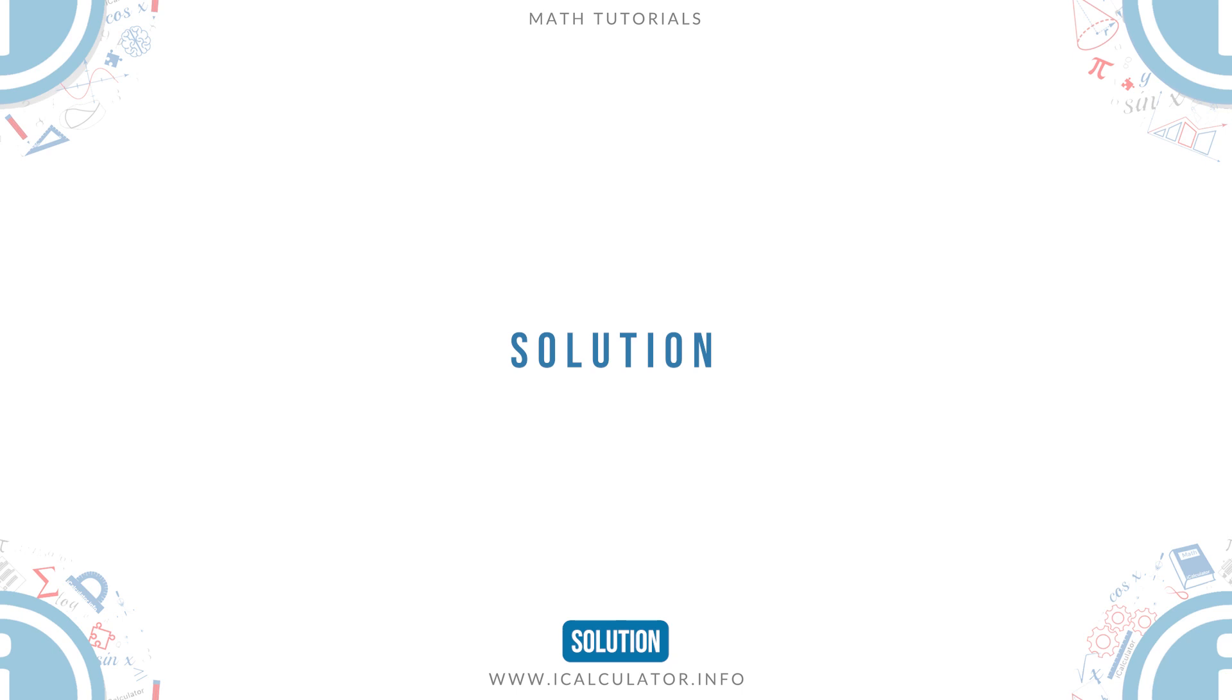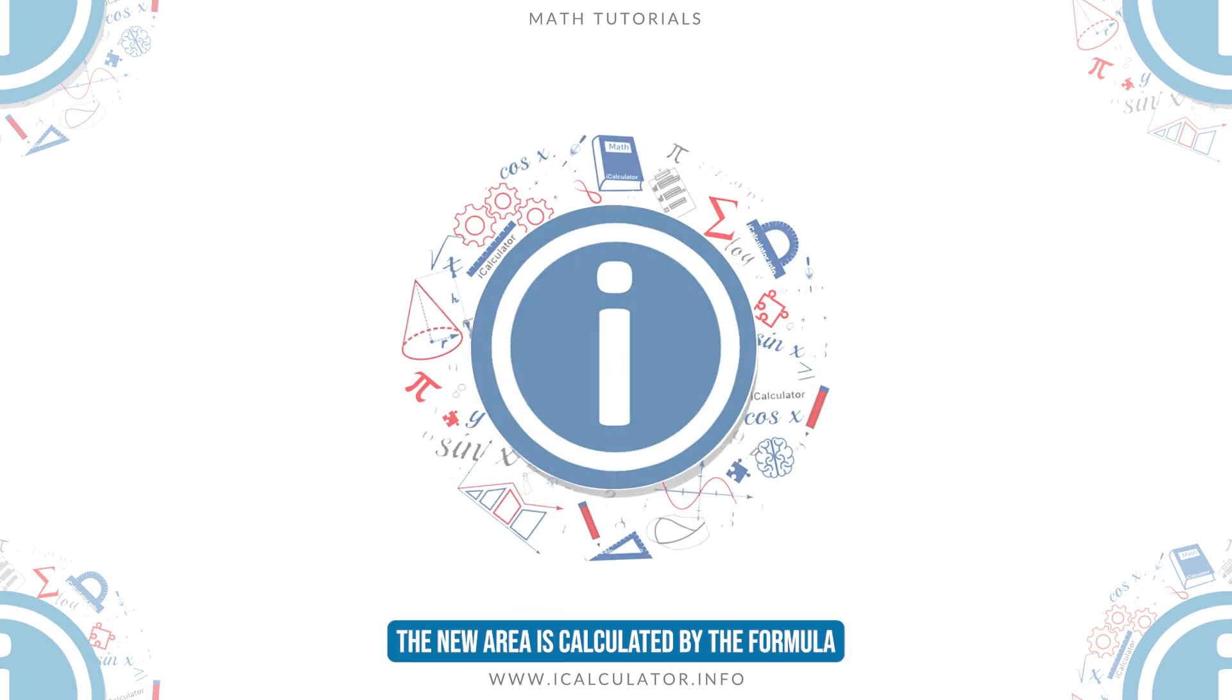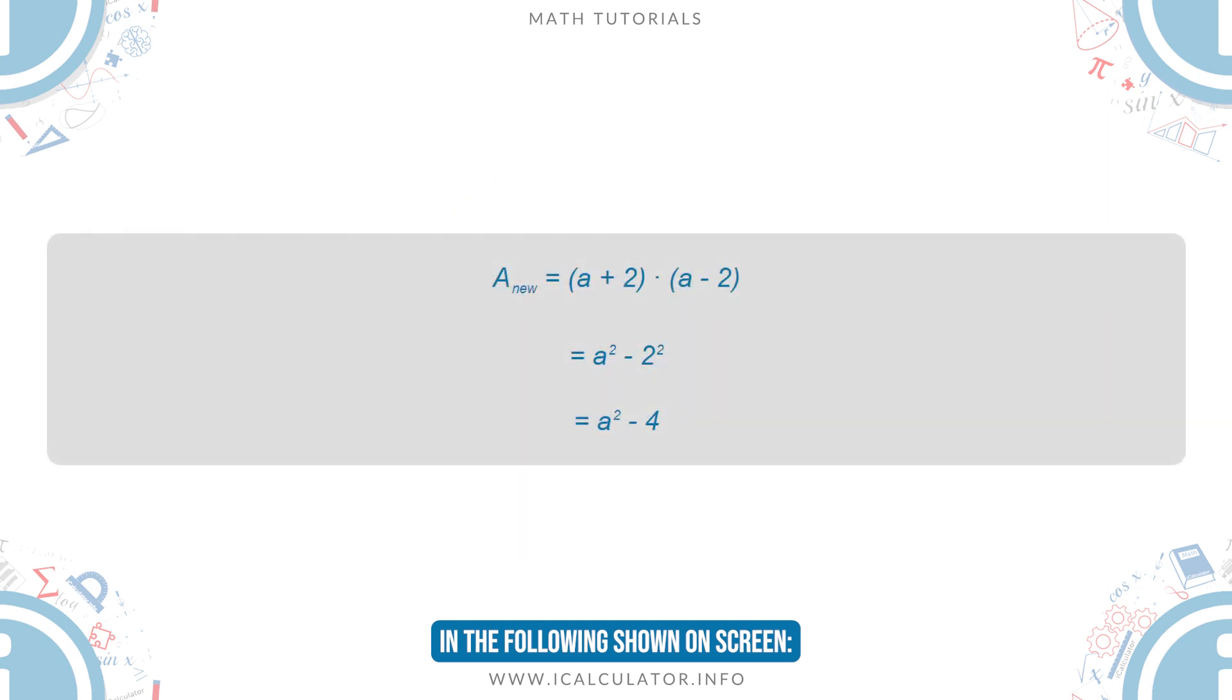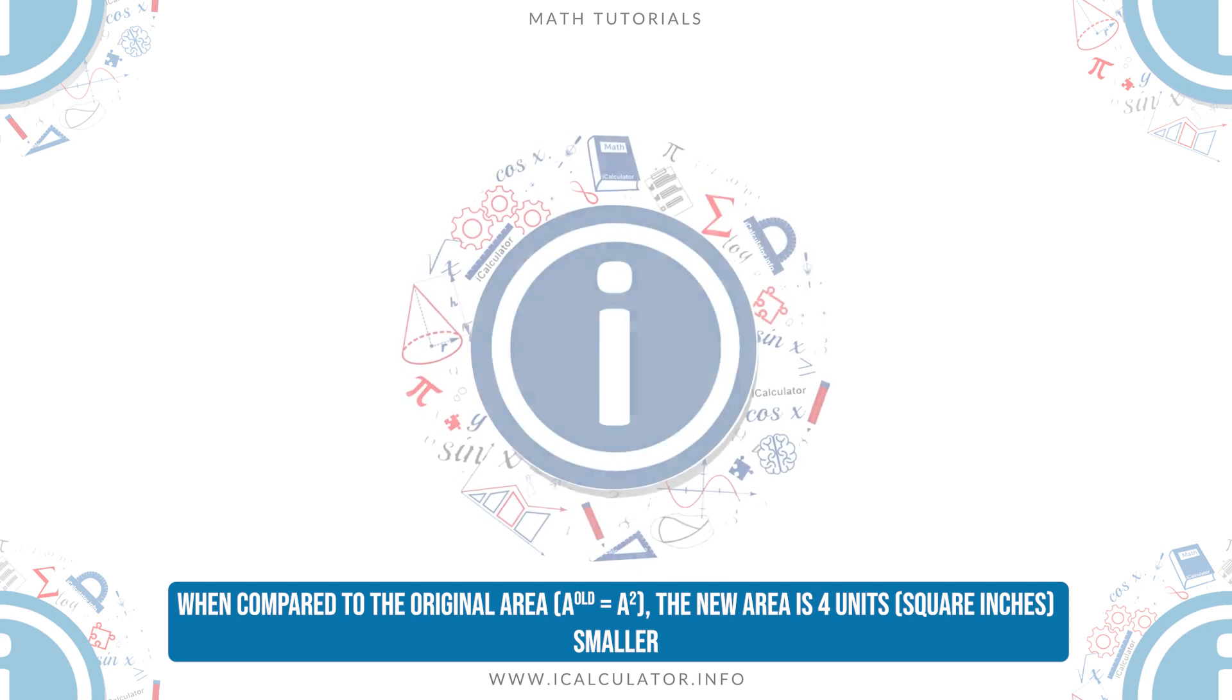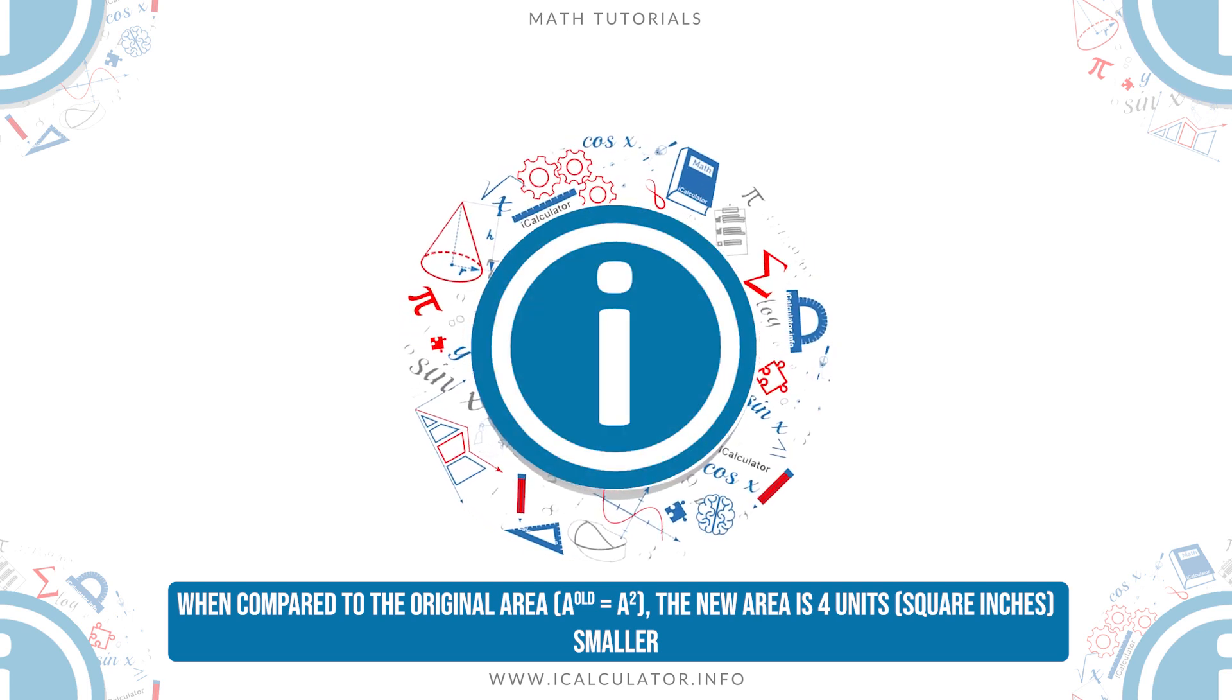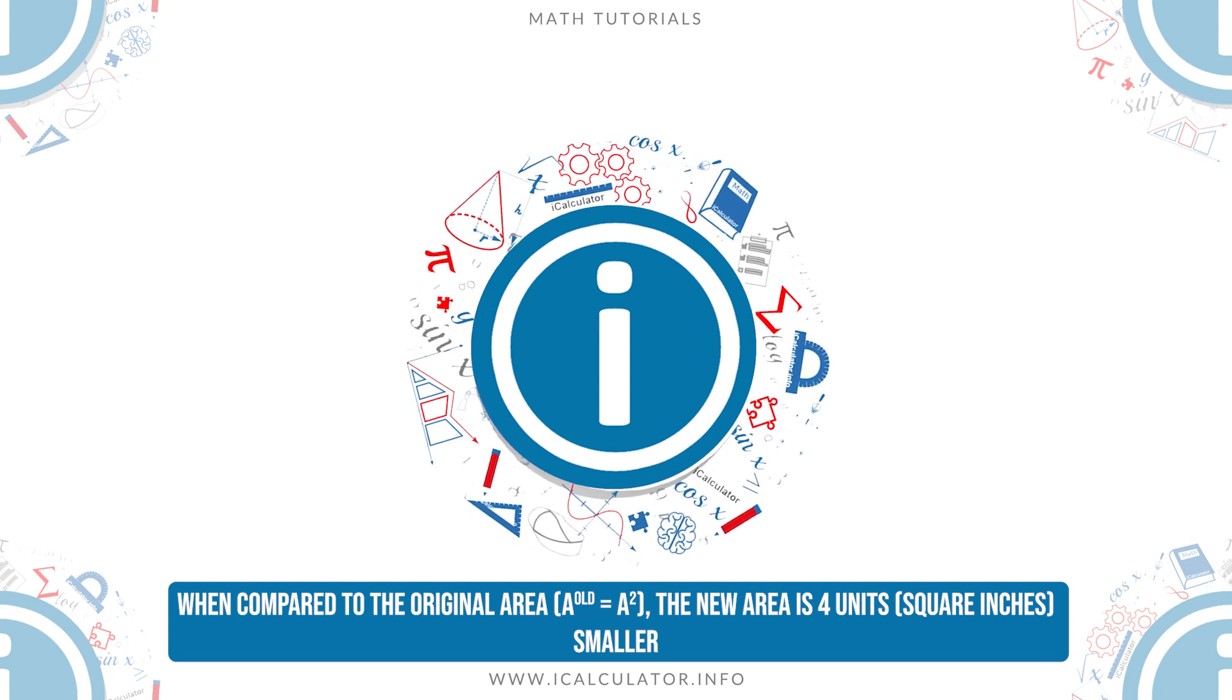Solution. The new area is calculated by the formula in the following shown on screen. When compared to the original area, a old equals a squared, the new area is 4 square inches smaller.